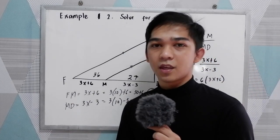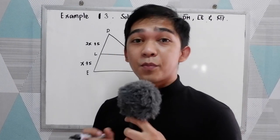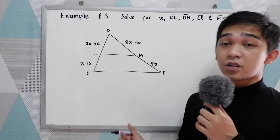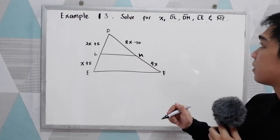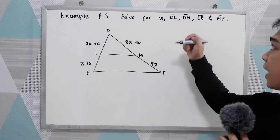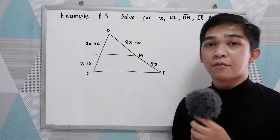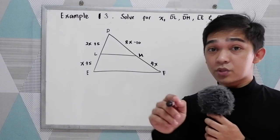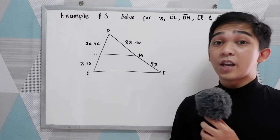Let's have example number 3. Before we proceed, I want you to answer this problem yourself. You need to solve for X, the length of DL, the length of DM, the length of LE, and the length of MF. Pause the video now, and after answering, resume watching to check your answers.